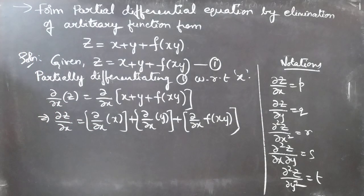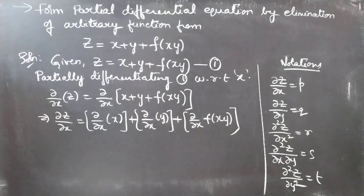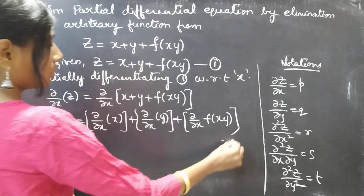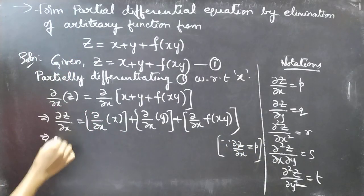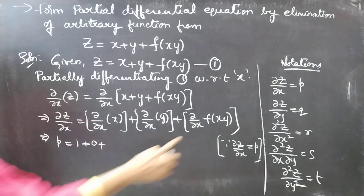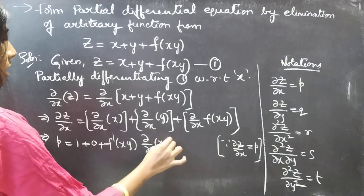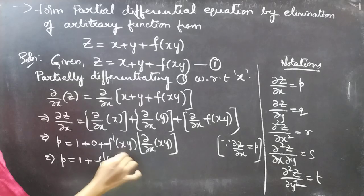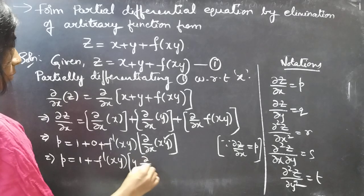Here we are partially differentiating with respect to x, so we'll treat y as constant. We know that z is a function of x and y — z is the dependent variable. We have the notation ∂z/∂x = p, so let's replace ∂z/∂x by p. This gives us p equal to the partial derivative of x with respect to x, times y as inner derivative — that is ∂/∂x of (xy).